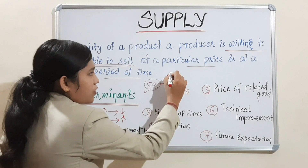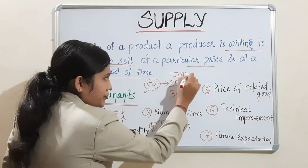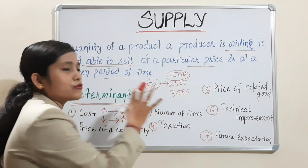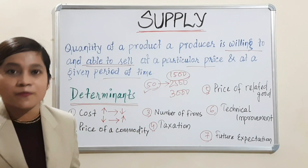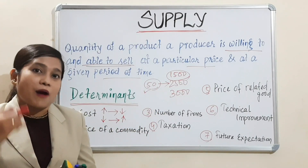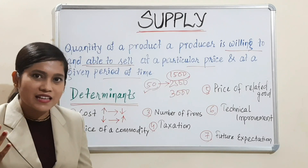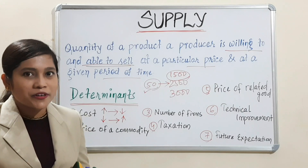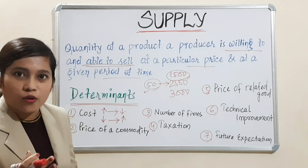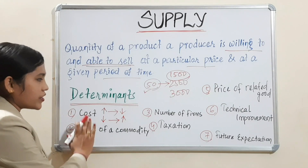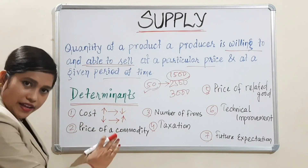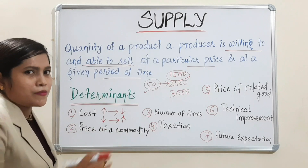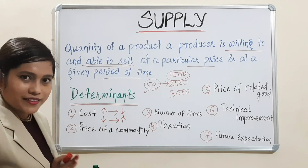Instead of 2500, if it is decreased to 1500, for the same 50 quintal rice, I have to spend only 1500. My net profit will increase because price is same and my cost of production is less now. So I will supply more. When cost increases, my supply will decrease. When cost decreases, my supply will increase — that means an inverse relation.